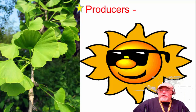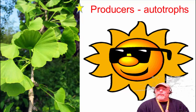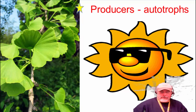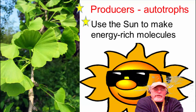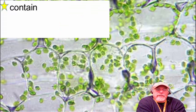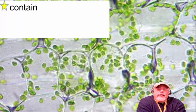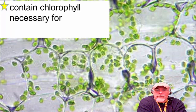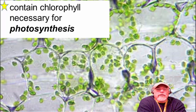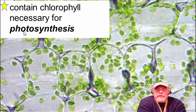The first type are known as Producers, and another word for Producers is Autotrophs. The Autotrophs, or Producers, use the sun's energy to make energy-rich molecules — this should be a review, as you've done photosynthesis in the past. Producers contain chlorophyll, which are the green structures inside of a plant cell, and chlorophyll is necessary to perform photosynthesis — making food from light.